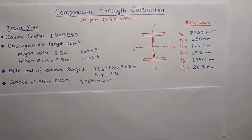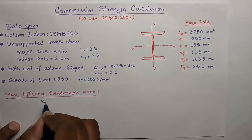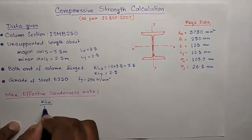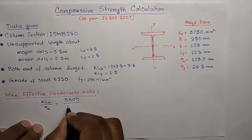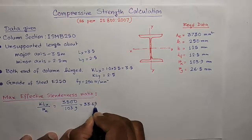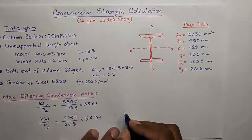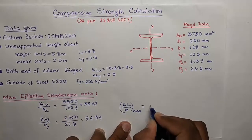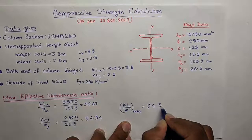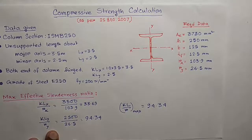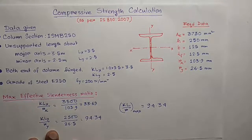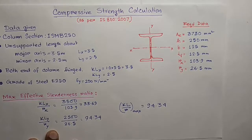Now the first step is to calculate the maximum effective slenderness ratio. So the slenderness ratio is effective length by the radius of gyration. So the maximum effective slenderness ratio is 94.34 and it is about the minor axis. So in our calculation we will determine the compressive strength of the column section for buckling about the minor axis.